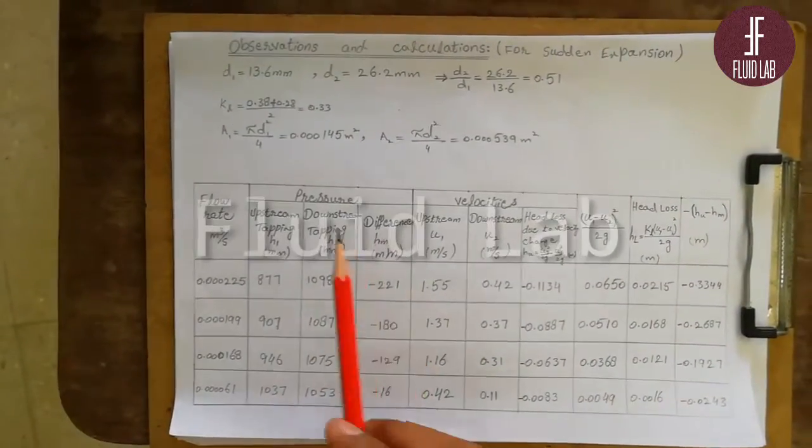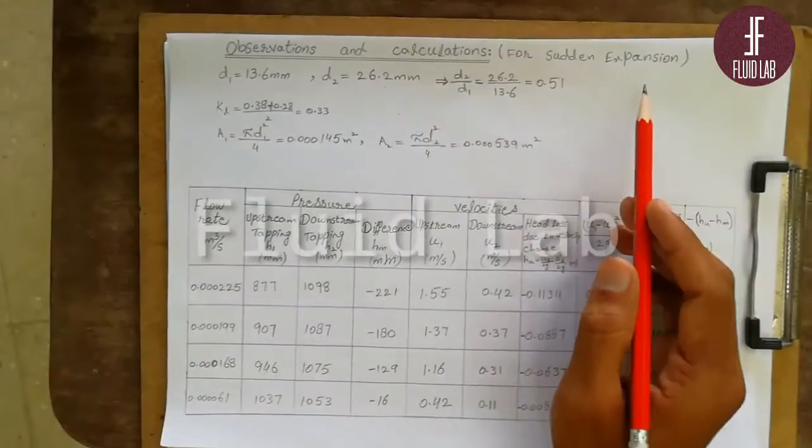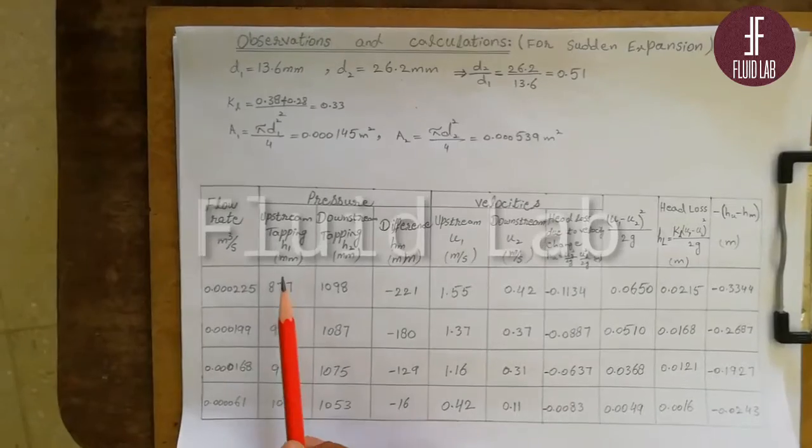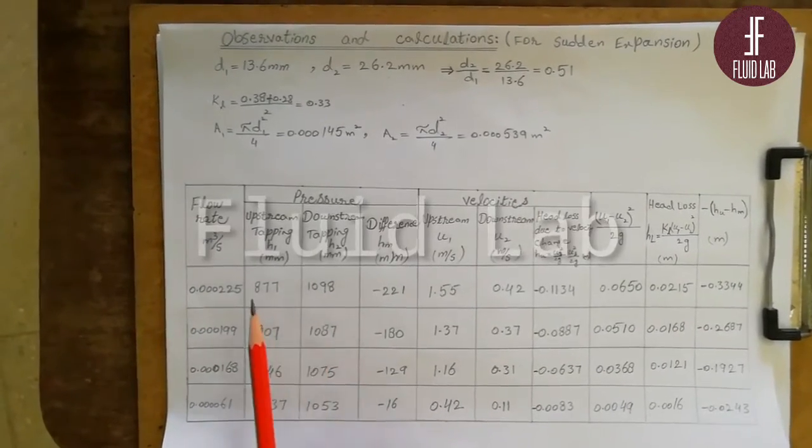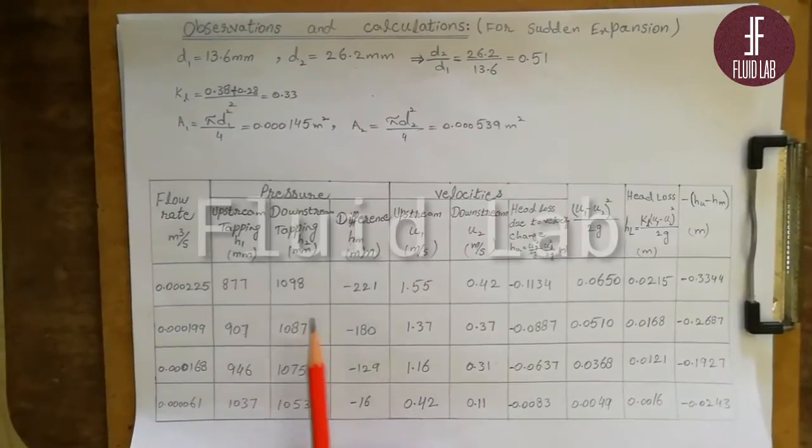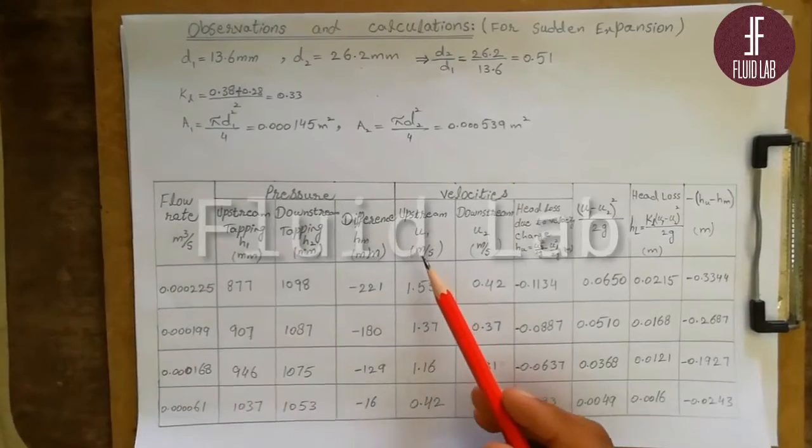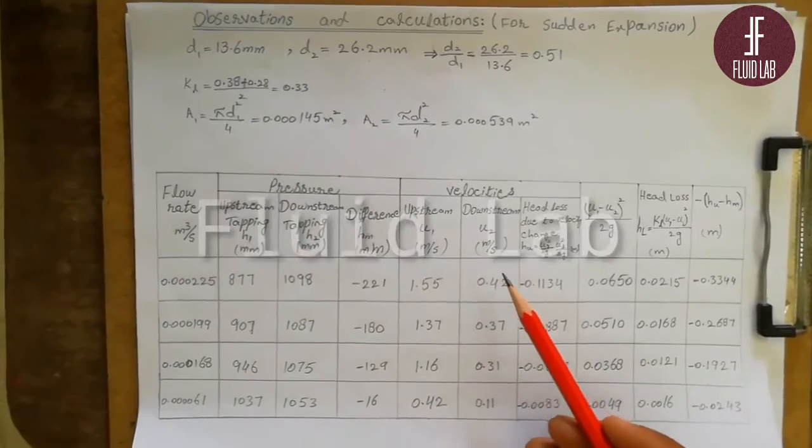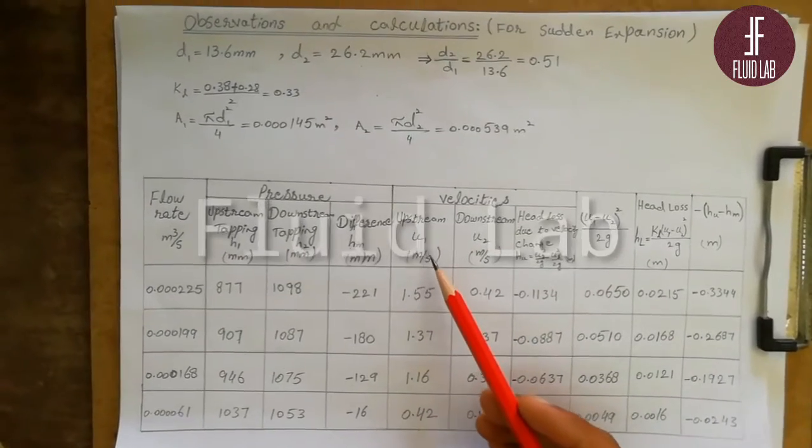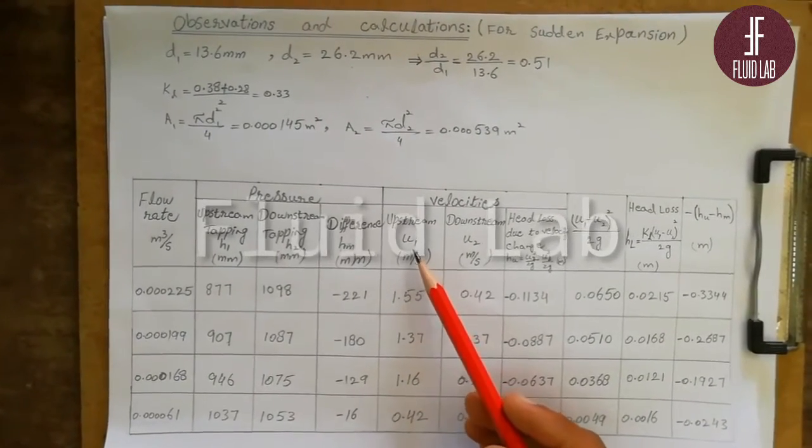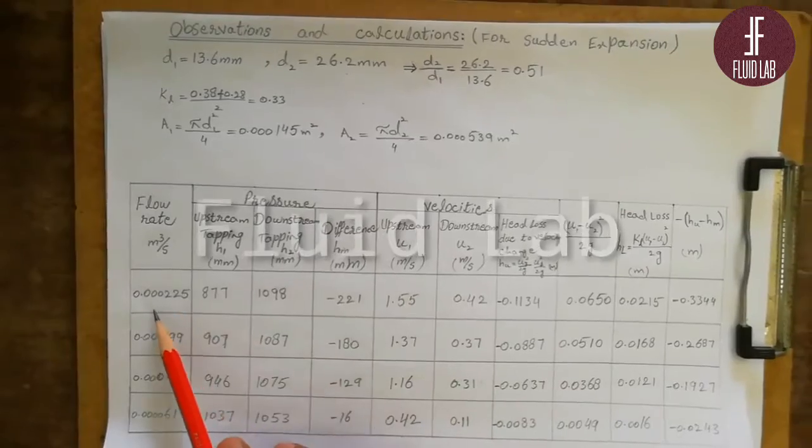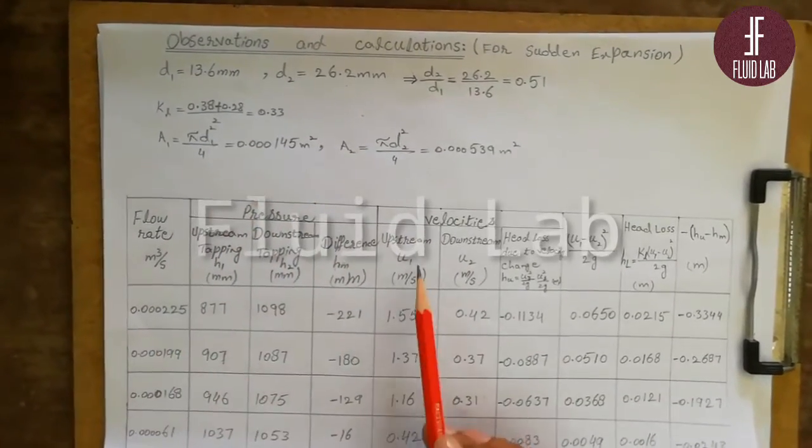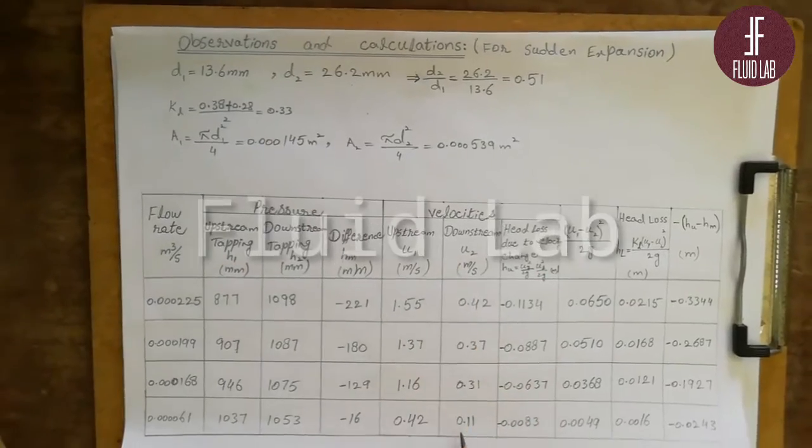These are the calculations for the pipe having sudden expansion. First column flow rate we measured from hydraulic bench and upstream and downstream readings from piezometric tubes. We take difference of both. U1 and U2 columns are upstream and downstream velocities. U1 equals Q divided by A1. Using area and discharge we calculated upstream and downstream velocities.